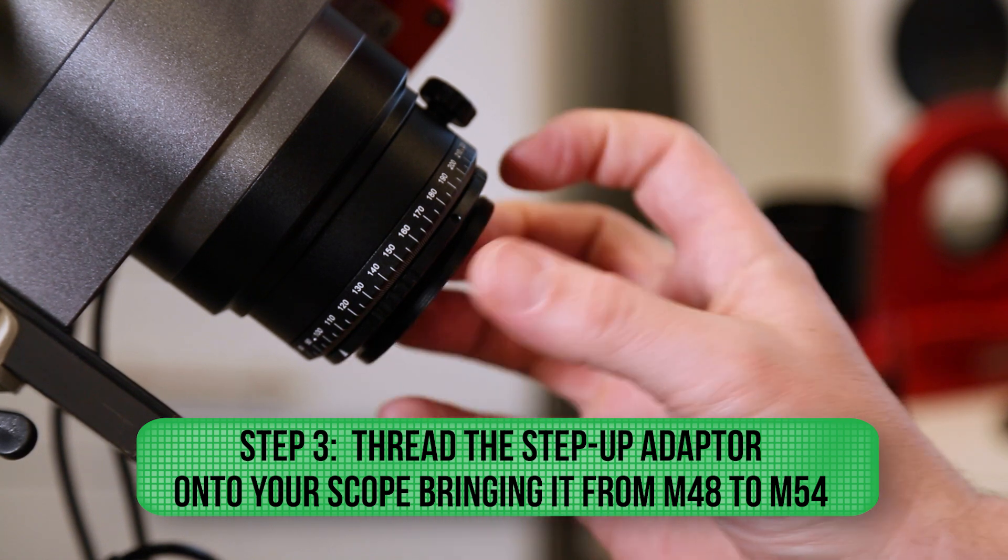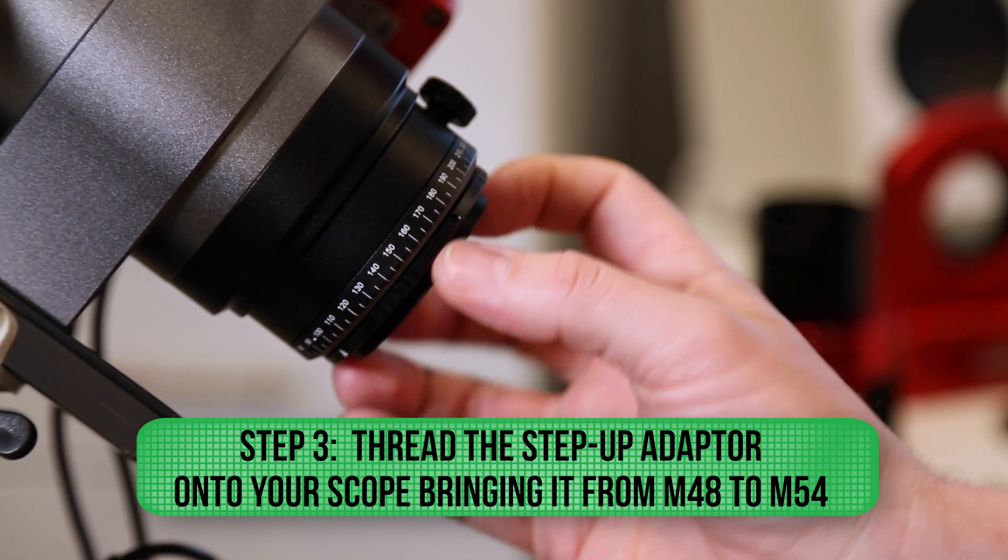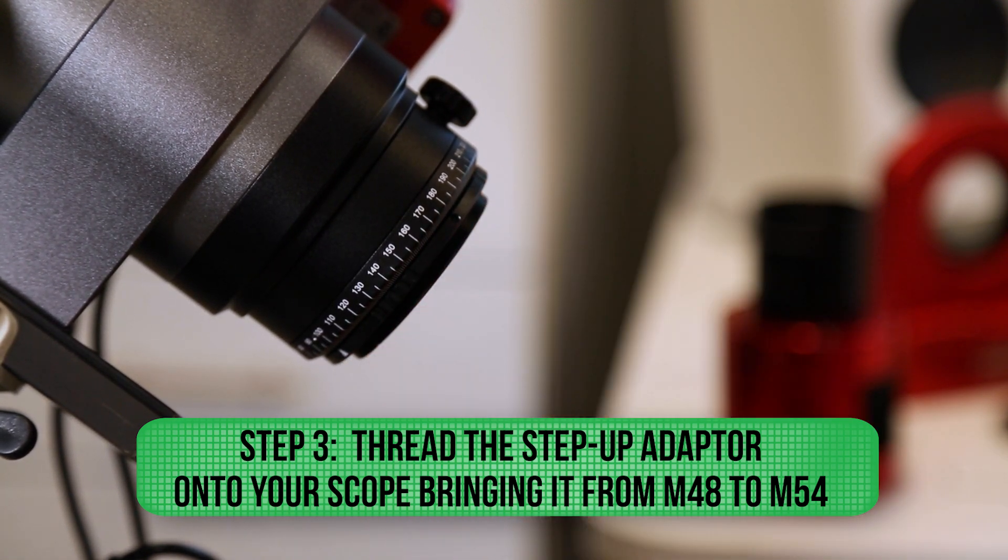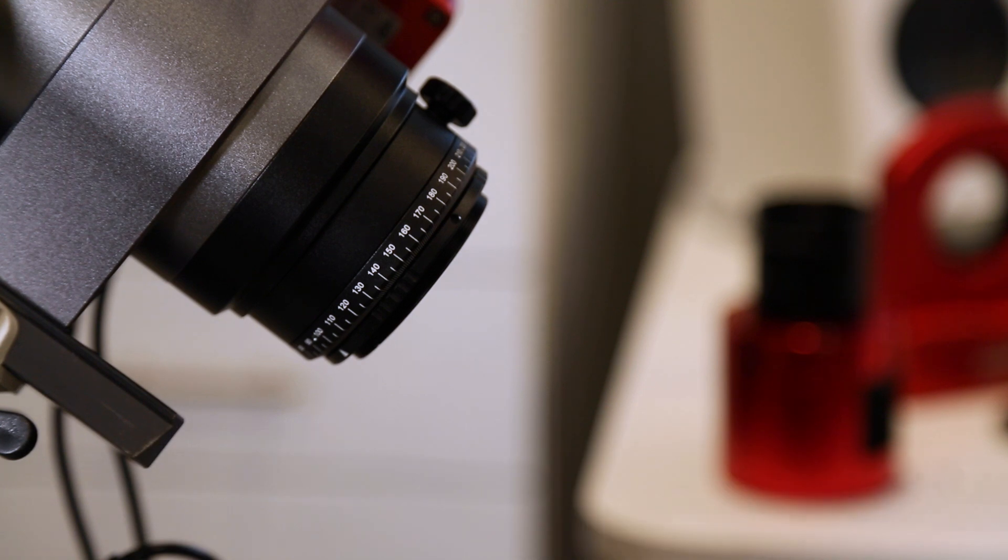So that's just bringing this from M48 up to M54 without adding any additional back focus. In the future, I would hope that ZWO would just include this M54 to M48 step down ring in the box with the CAA. It seems like a weird omission to me.